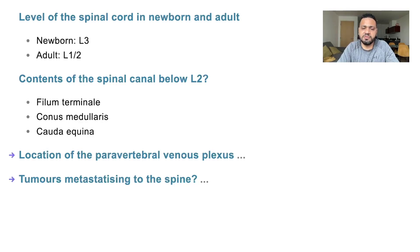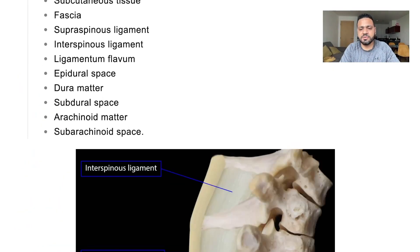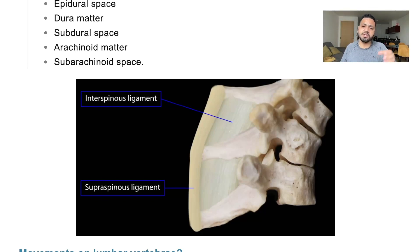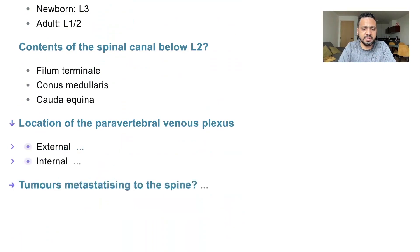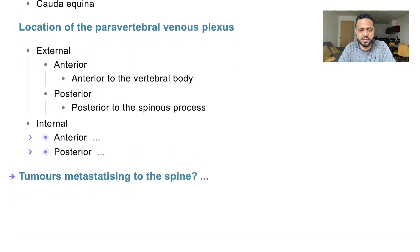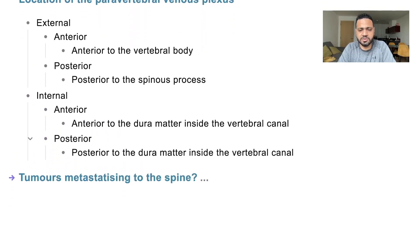Location of the paravertebral venous plexus: there are two groups — internal and external — each with anterior and posterior divisions. The external anterior plexus is in front of the body of the lumbar vertebra. The external posterior plexus is related to the spinous process. The internal anterior plexus is anterior to the dura mater, and the internal posterior plexus is posterior to the dura mater, inside the vertebral canal.